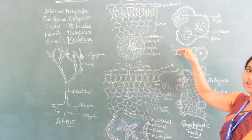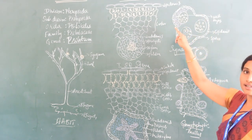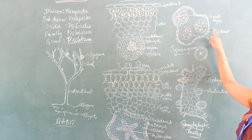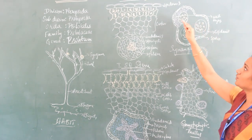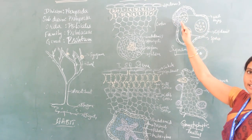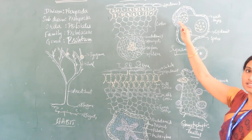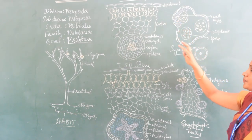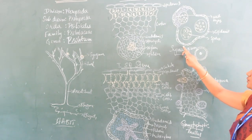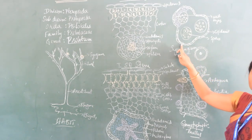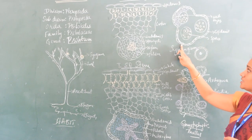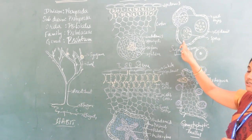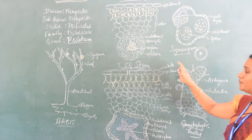The synangium has an outermost protective layer called epidermis, followed by a wall layer. Until the sporogenous cavity develops, it is filled with wall layers. At the time of dehiscence, towards the dehiscence region, epidermal cells are thin in nature and they dehisce, releasing spores from the cavity.